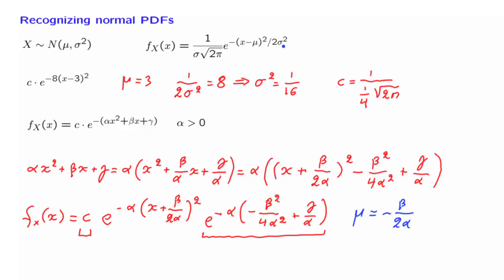And as for sigma squared, we match and say that 1 over 2 sigma squared must be equal to the constant that we have up here, which is alpha. And from this, we conclude that sigma squared is equal to 1 over 2 alpha.